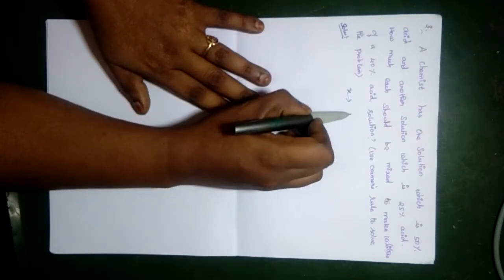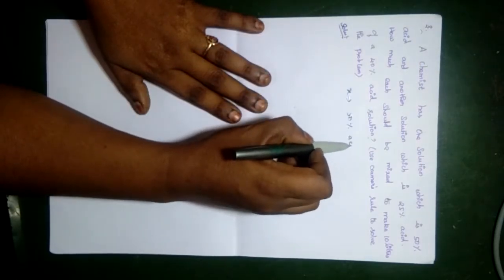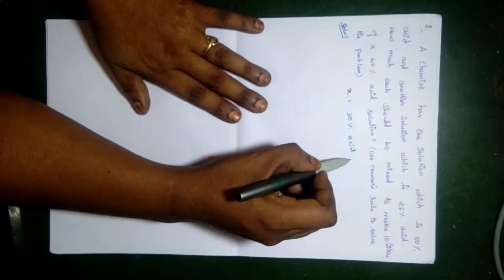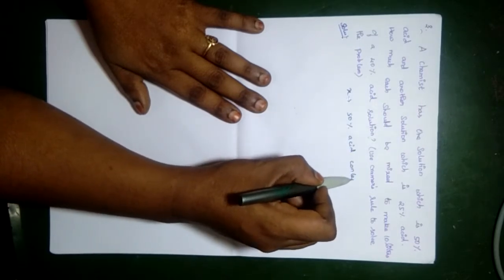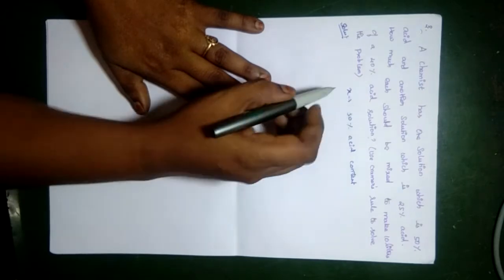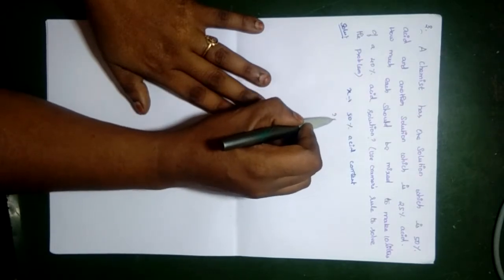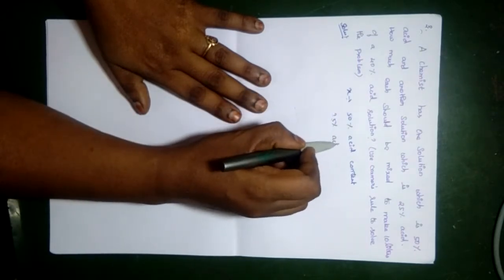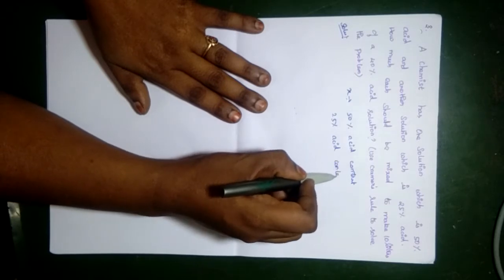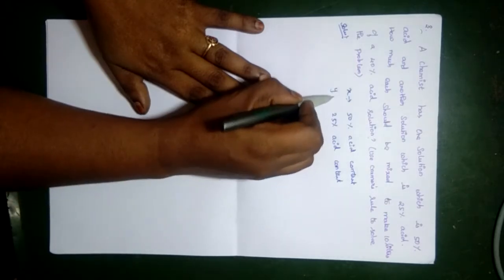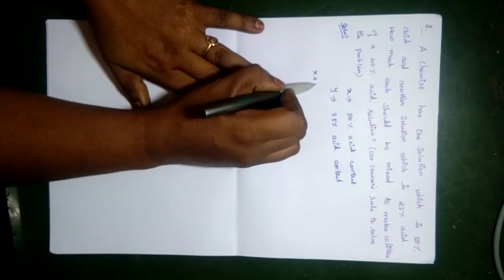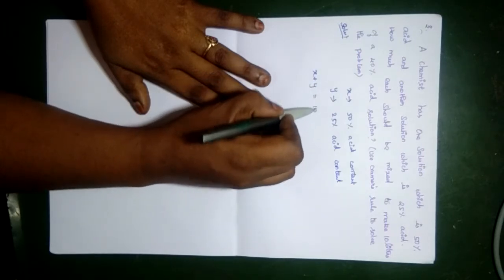Let's take X as 50% acid content. So 50% acid content equals X liters and 25% acid content equals Y liters. The total equals 10 liters.